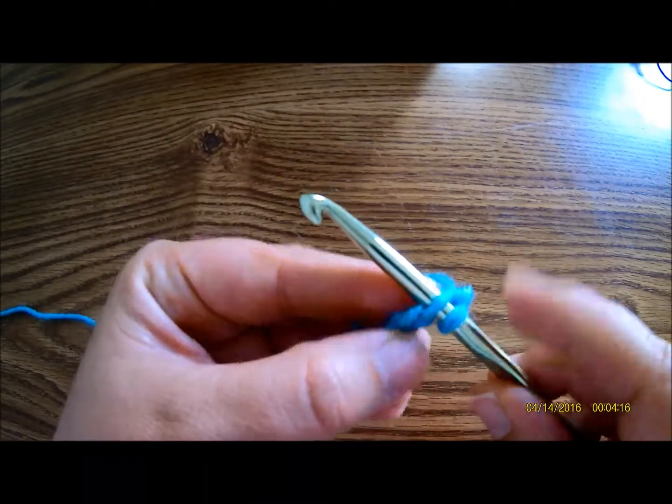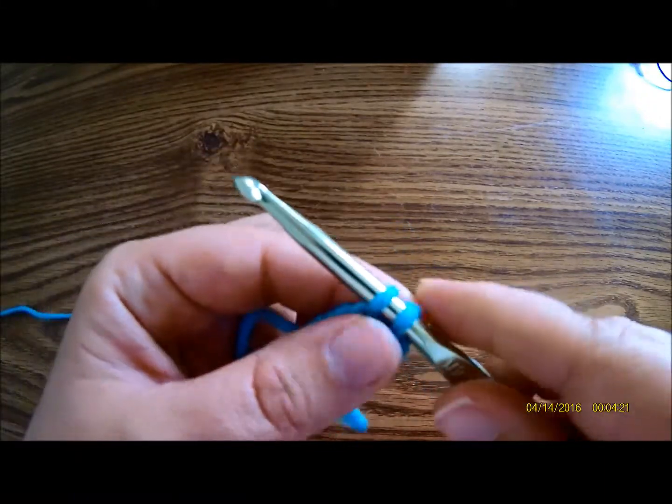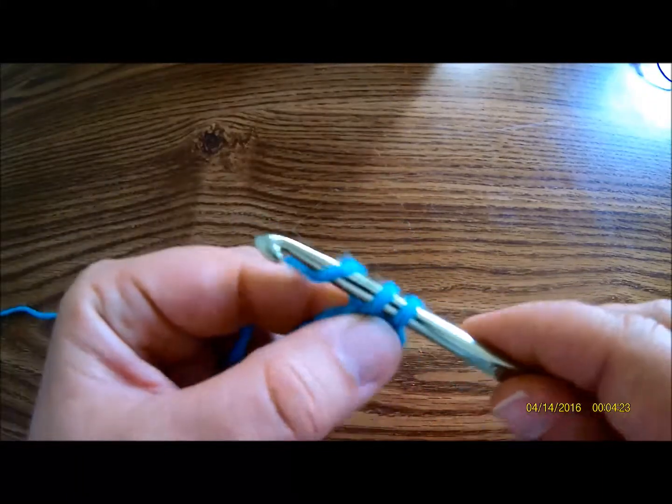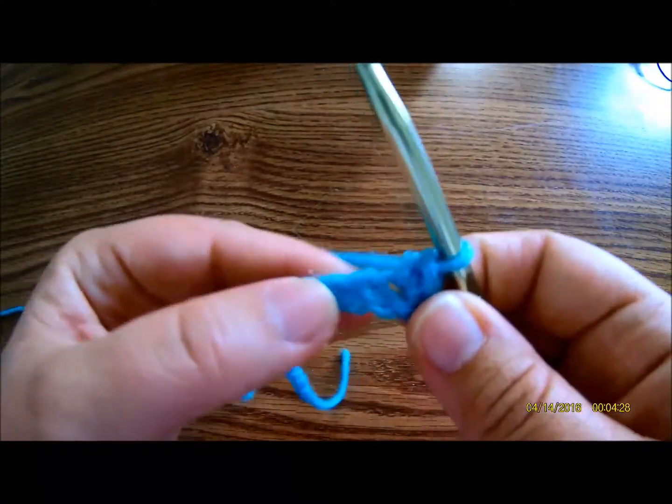So insert your hook, yarn over, pull up a loop, yarn over, pull through two loops. And then you're going to continue that all the way down the row.